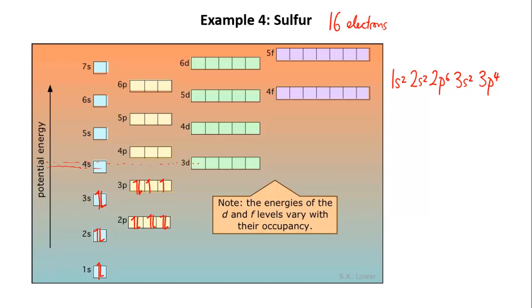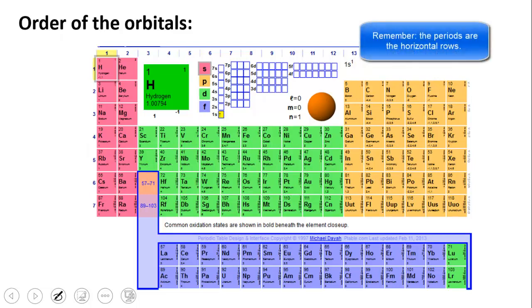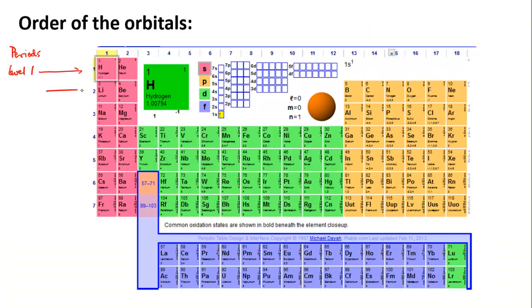The last thing that I want to go through with you is that one of the problems students often have is remembering the order of the orbitals when they're writing electron configurations. Happily you can actually just read the order of the orbitals from the structure of the periodic table. First of all recall that the periods in the periodic table tell you the energy level. So hydrogen and helium have their electrons in level 1. Lithium and beryllium etc reach up to level 2. When you get up to sodium and magnesium and so on they're in level 3 and so on.